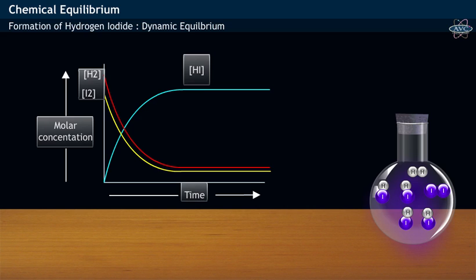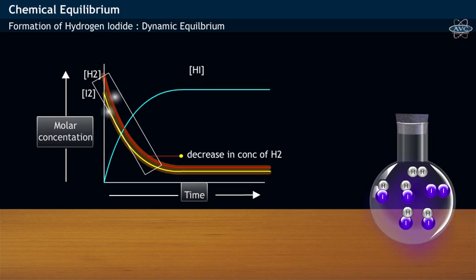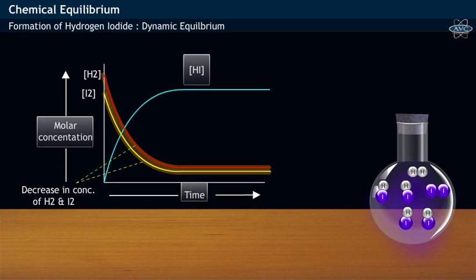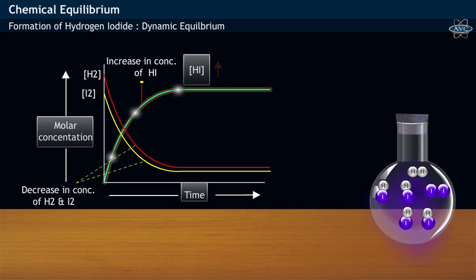Here in the graph, the downward curve indicates the decrease in the concentration of reactants Hydrogen and Iodine. Whereas, the upward curve indicates the increase in the concentration of product Hydrogen Iodide.